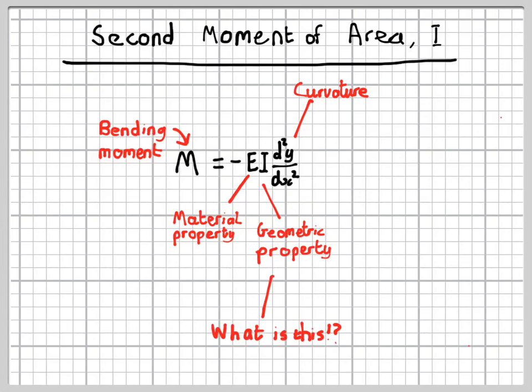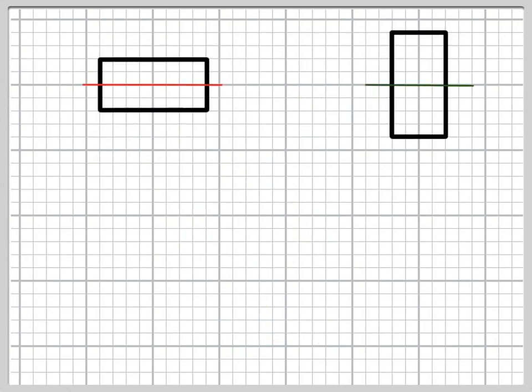I is a property of a cross-section of the beam. So if you sliced through the beam and looked at the shape of the end of a beam, I is associated with that shape. And of course, if we have beams of different shapes, then their bending behaviour will be different. So I needs to capture this. It's probably best to look at an example to see how this works.